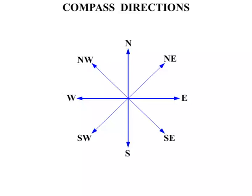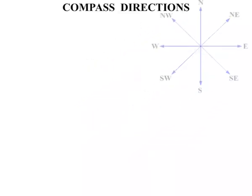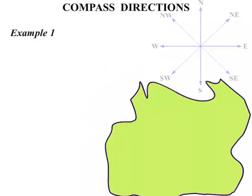So those compass directions there. Let's put them to the side a bit. Example 1, we've got our island here with a few points on the island.